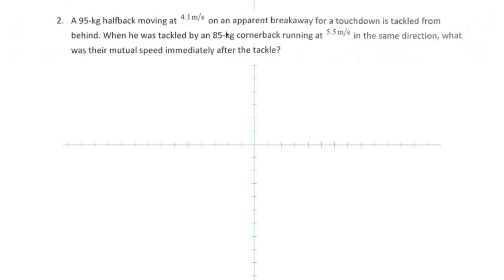Now question two. Here you have a 95-kilogram halfback moving at 4.1 meters per second, trying to break away for a touchdown, and being tackled from behind by an 85-kilogram cornerback who is running at 5.5 meters per second in the same direction.